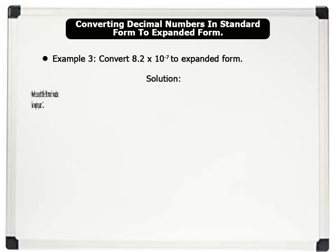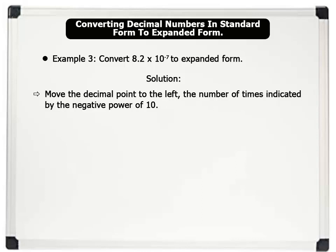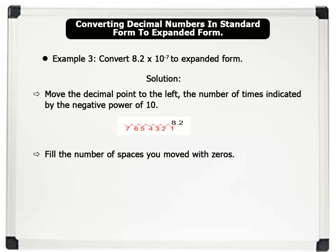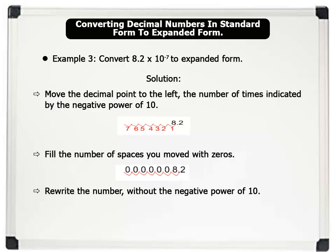Solution. 1. Move the decimal point to the left the number of times shown on the negative power of 10. The negative power of 10 is minus 7, so we move the decimal point 7 places to the left, as shown on the board. 2. Fill the number of spaces you moved with zeros. The spaces are filled with 6 zeros. 3. Rewrite the number without the negative power of 10. Therefore, 8.2 times 10 raised to the power minus 7 equals 0.00000082.